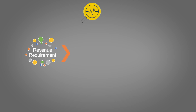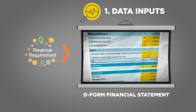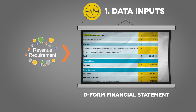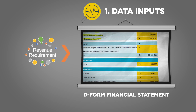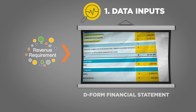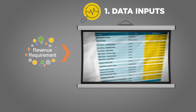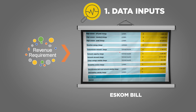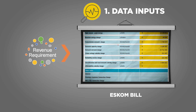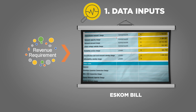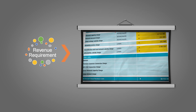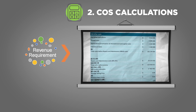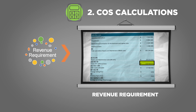The first standard data input is the D-Form financial statement. This sheet mirrors the D-1 income statement tab in your D-Forms, so just cut and paste your cost data in here. The second standard data input is your ESCOM bill. This table should sum your ESCOM bills for all your intake points for the previous financial year. The tool then sums your D-Form and your ESCOM bill to arrive at your revenue requirement.